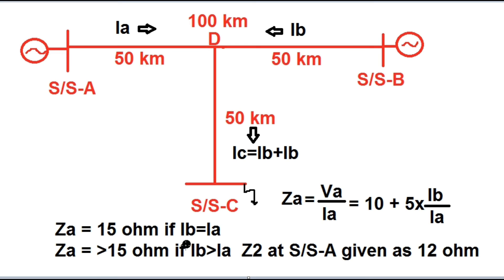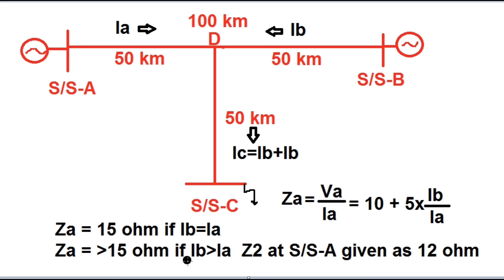If the source at substation B is stronger than at substation A, then Ib is greater than Ia, and the impedance seen at substation A will be greater than 15 ohm, since Za equals 10 plus 5 times (Ib/Ia) and Ib/Ia is greater than 1. This worst-case value must be considered when calculating the zone 2 setting from both substations for tee feeder protection, and this is how the difficulty of tee feeder protection can be overcome for zone 2 setting.